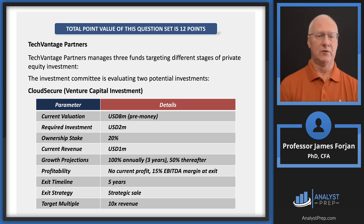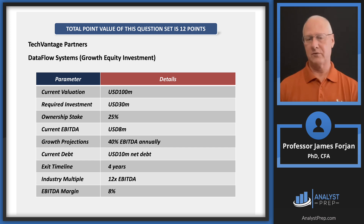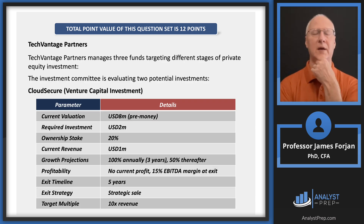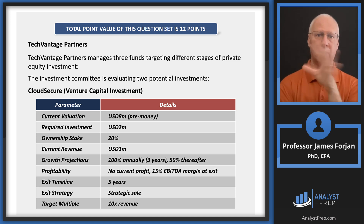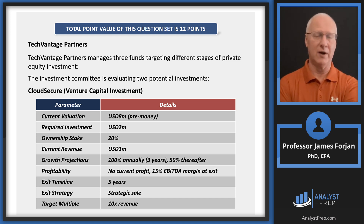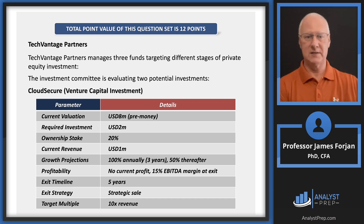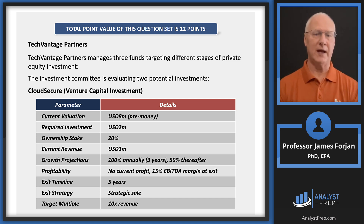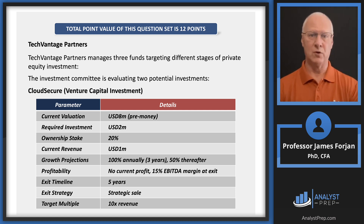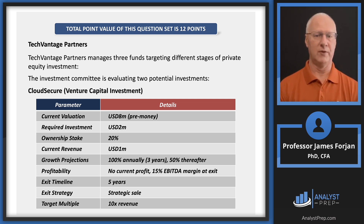There's a lot of good details in these two tables. Look at the bottom — there's a target multiple in the first table and an industry multiple at the bottom of the second table. We need to go back to what we learned in Level 1, where we used multiples for valuation by multiplying a multiple by something to get a value. The math is fairly straightforward, but we need to make sure we pick the correct input variables and ignore those that are irrelevant.